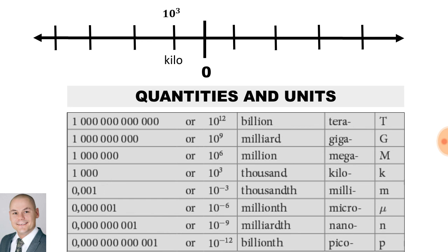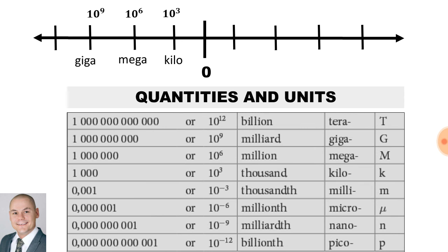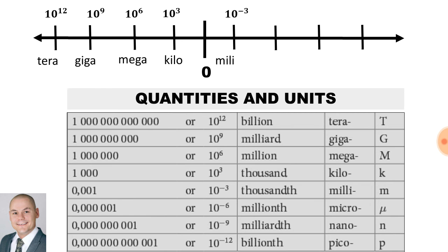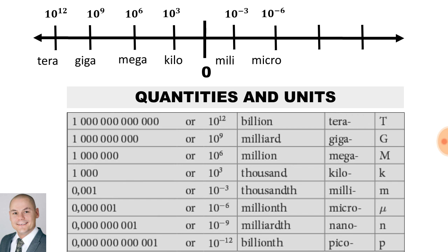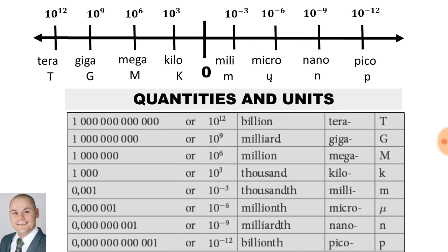Kilo is 10 to the exponent of 3. Mega, 10 to the exponent of 6. Giga, 10 to the exponent of 9. Tera, 10 to the exponent of 12. Milli, 10 to the exponent of minus 3. Micro, 10 to the exponent of minus 6. Nano, 10 to the exponent of minus 9. And Pico, 10 to the exponent of minus 12.